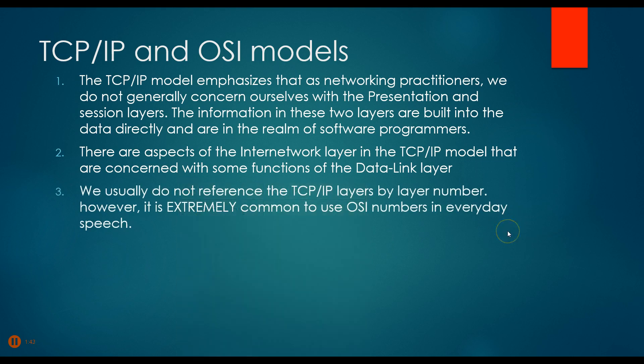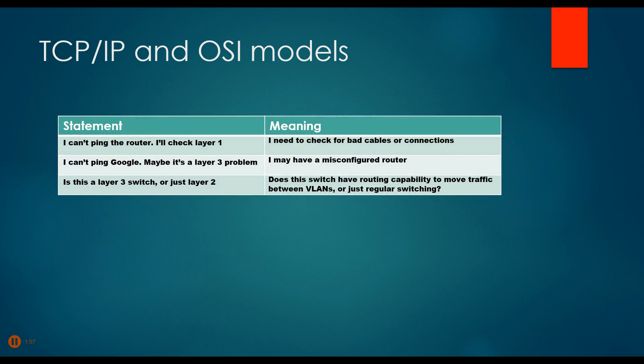The third item is that we usually don't reference the TCP/IP layers by number, but it's extremely common to do so with the OSI numbers, and we do this constantly. For example, you'll hear statements like: 'I can't ping the router, I'll check layer one' — meaning I need to check for bad cables or connections. Or: 'I can't ping Google, maybe it's a layer three problem.'